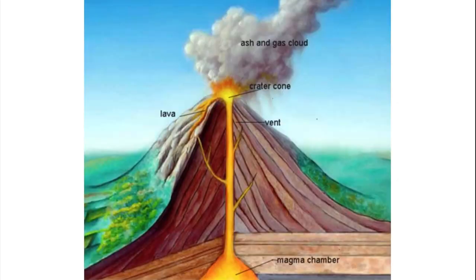Let's first discuss the anatomy of a volcano. Deep underground is a magma chamber, which is a reservoir of molten rock. Because liquid rock is less dense than the solid rock around it, buoyancy causes magma to slowly move up over time and fill this magma chamber. The magma then flows through a conduit in the center of the volcano, and sometimes out of side vents. Once the magma has left the volcano, we call it lava — that's the key difference between magma and lava. Magma is underground, whereas lava is molten rock that has emerged from the ground.